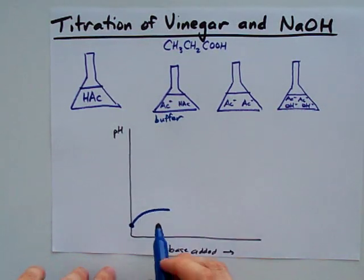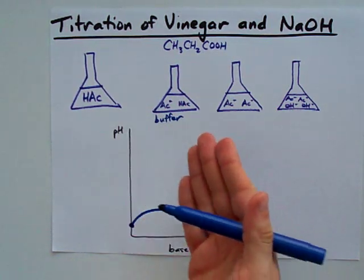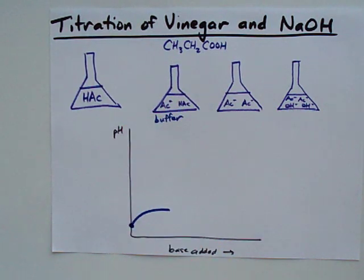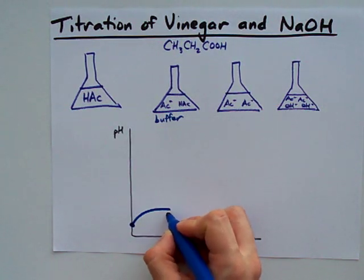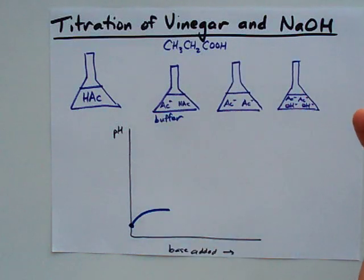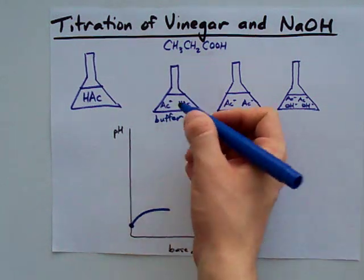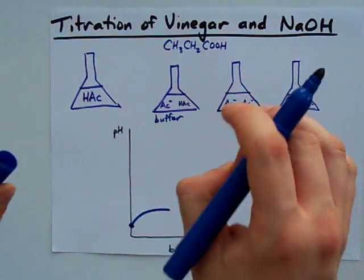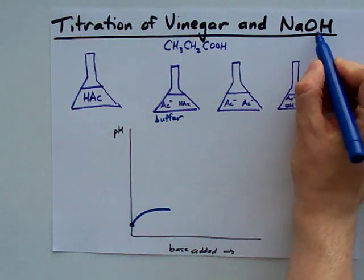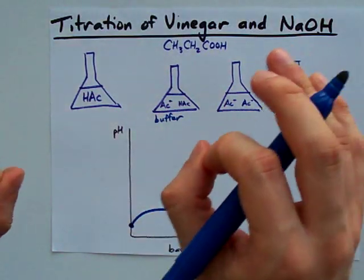What ends up happening is you get a solution where, even though you're adding more base, the pH is resisting change — that is, after all, what buffers are for. In the region where the curve is flattest, the amount of AC- and HAc in your solution is exactly the same. You've added exactly half as much NaOH as you started out with vinegar. This is your half-titration point, and it's the point at which you have the most excellent buffer.